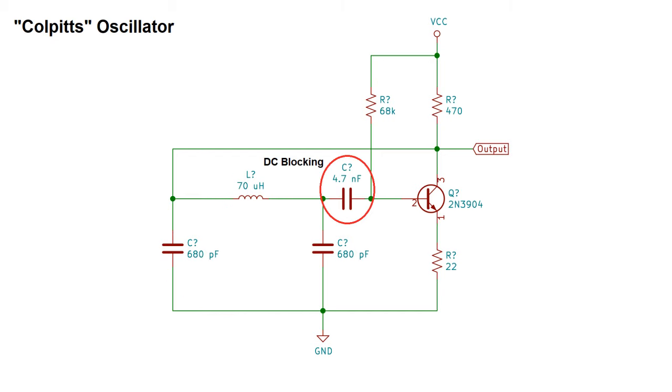The third capacitor here blocks DC from getting through, and the large value resistor provides some bias current to the transistor to get it started. The 22 ohm resistor between the emitter and ground stabilizes the oscillation. I found that I had to tinker with the values of the biasing and stabilizing resistor before I could get the circuit to oscillate.